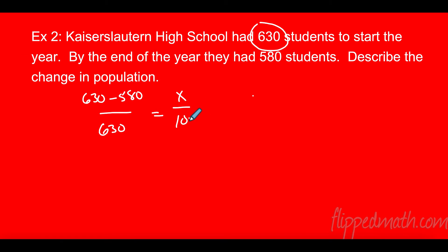And that's going to equal x over 100. So 630 minus 580 is 50 over 630. Cross multiply and I get 5,000 equals 630x. Divide by 630, and what do we get? Just a small little number. It's a decrease of 7.9%. That's not that big is it?